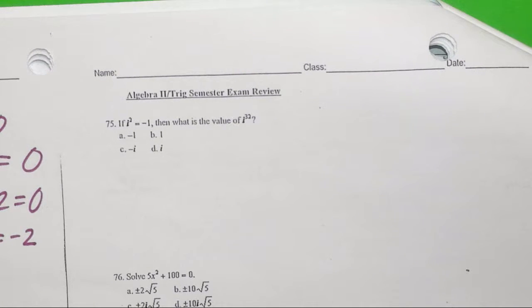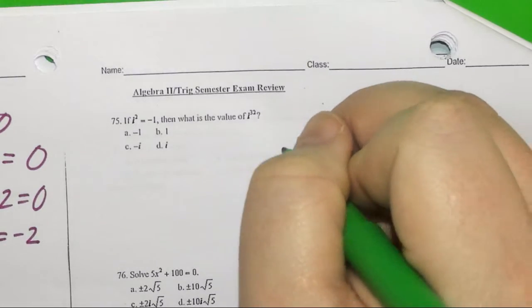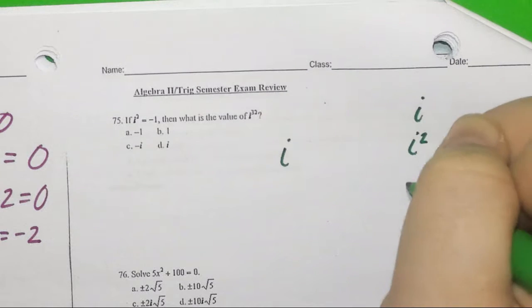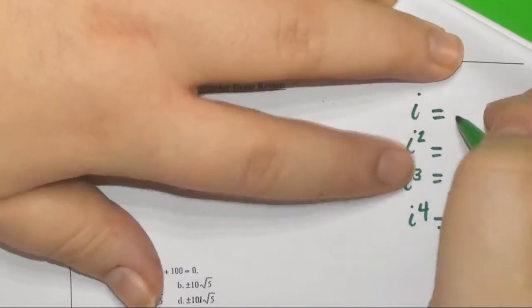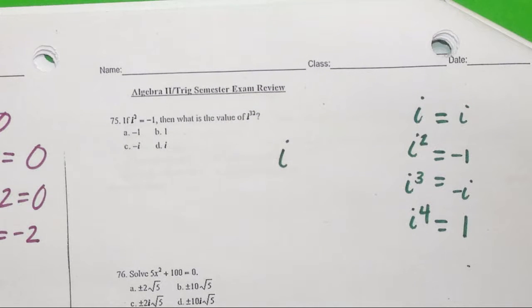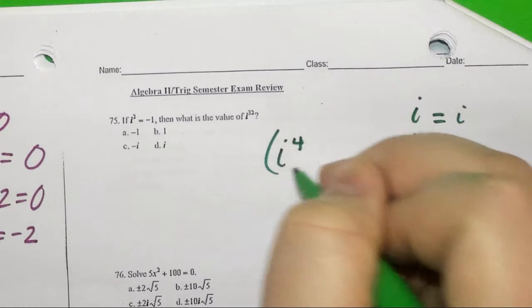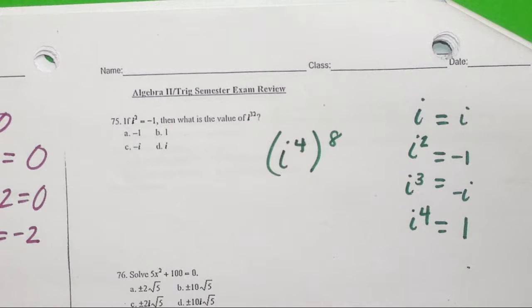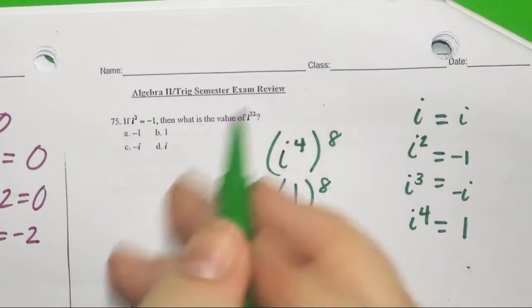75 involves complex numbers. You have to remember something about complex numbers. If you said B, circle, plus one. I had a trick where I remembered i squared is negative one. My teacher taught me to remember that i to the fourth was one. I would say i to the fourth raised to the eighth, because four times eight is 32. I to the fourth is one, so I have one to the eighth. Hence, why the answer is B.